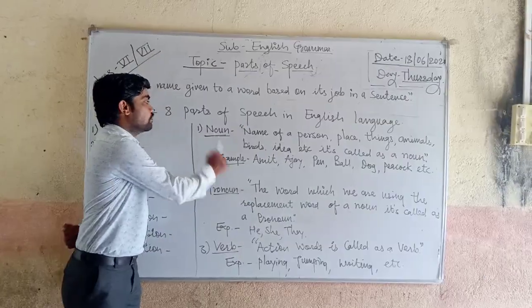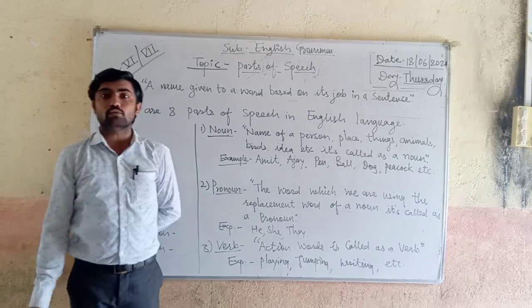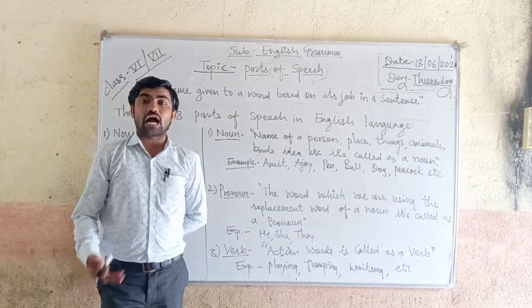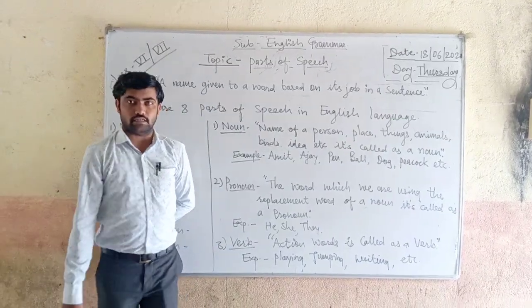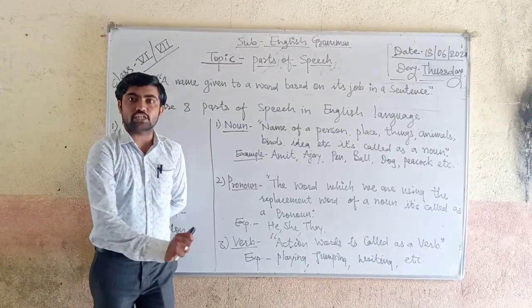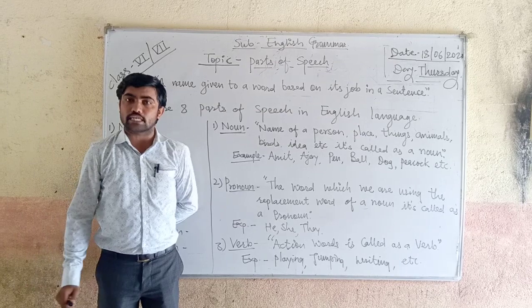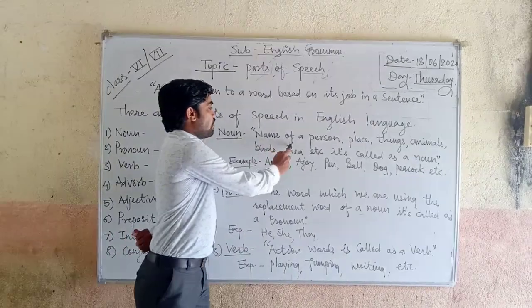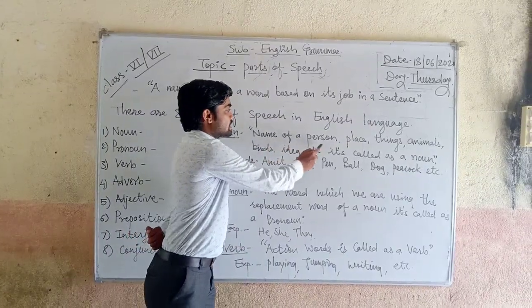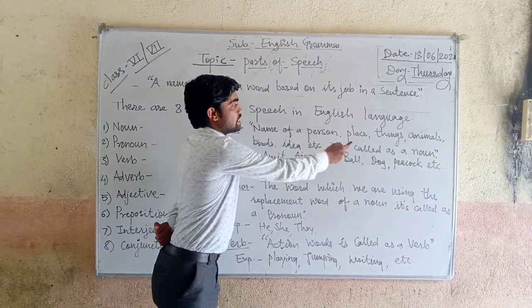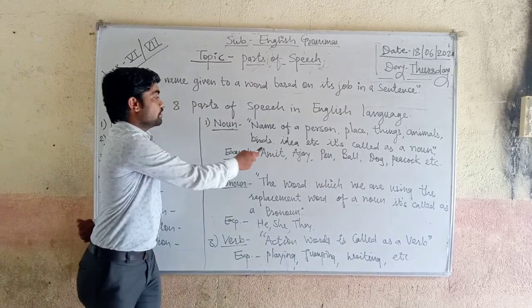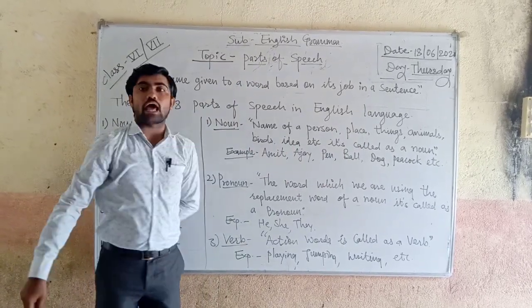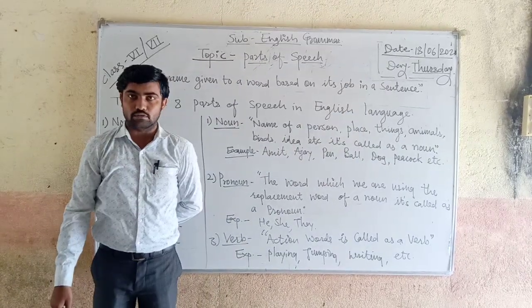First is the noun. The definition of noun is: a name of a person, place, thing, animal, bird, or idea is called a noun.